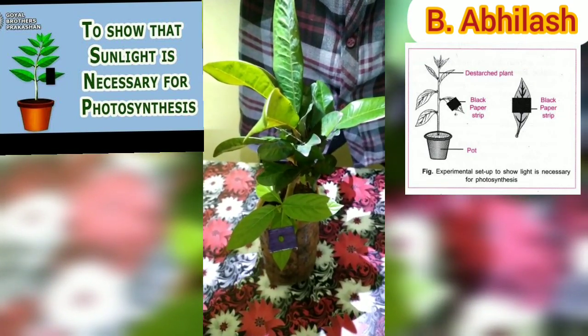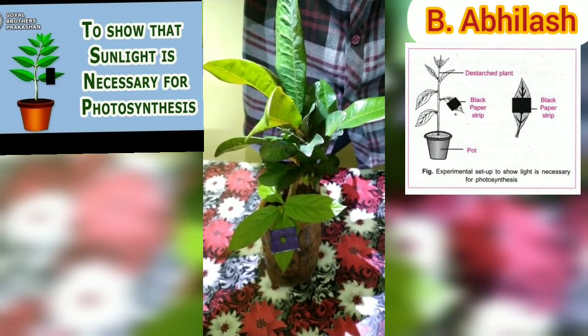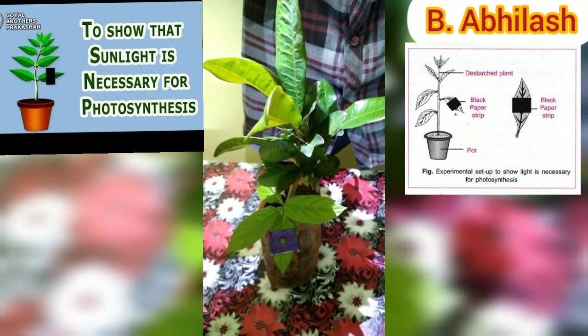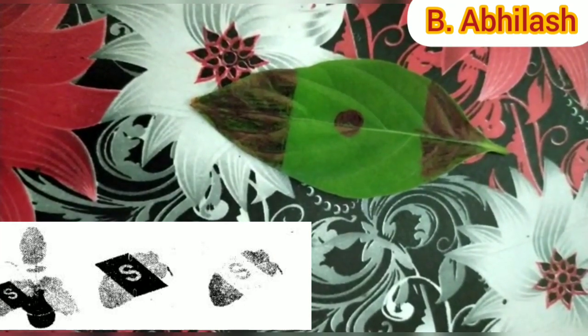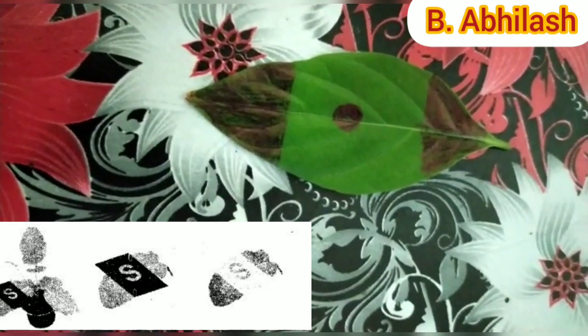Cover one of its leaves with black paper on which a design is cut. Fix the paper on the leaf in such a manner that light does not enter the dark part. Place this plant in the sunlight. After a few hours of exposure to bright sunlight, test the leaf covered by black paper for the presence of starch. You will observe that the plant part exposed to sunlight will become blue-black in color, and the part kept under the black paper will be pale in color. By this, we can conclude that sunlight plays a key role in photosynthesis.